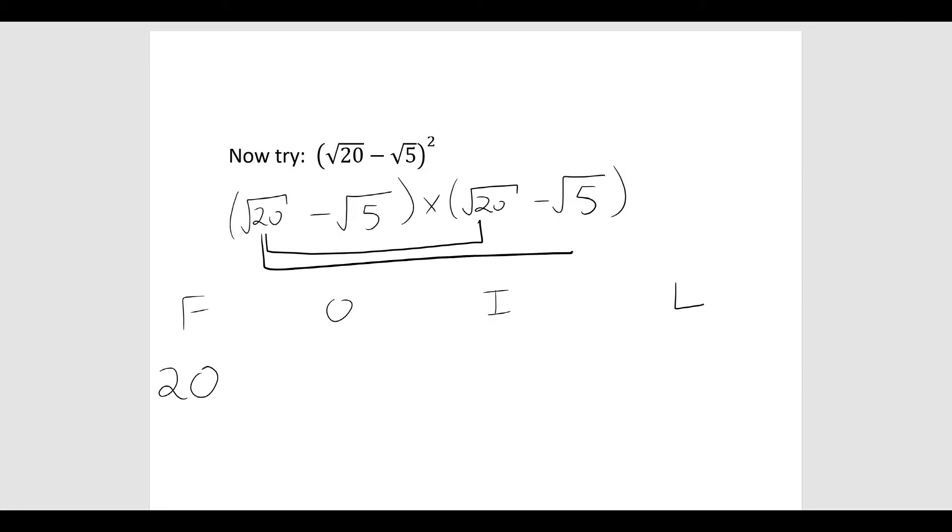Outside, root 20 times minus root 5, which is going to be minus the square root of 20 times 5, which is 100. So I have minus root 100. Inside, minus root 5 times root 20, which is also going to be minus root 100. And you get this symmetry because we're squaring the bracket.